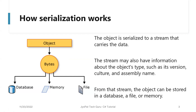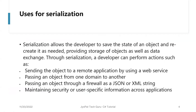From that stream the object can be stored in a database, a file, or memory. Whatever information you want to store is ultimately converted into bytes, and those bytes are stored in different ways.